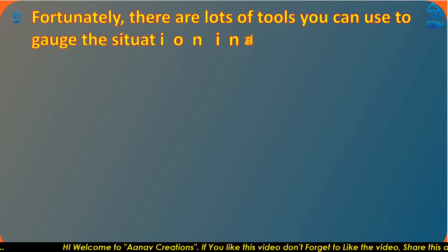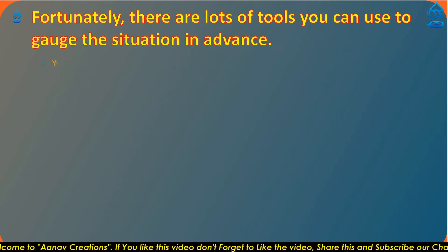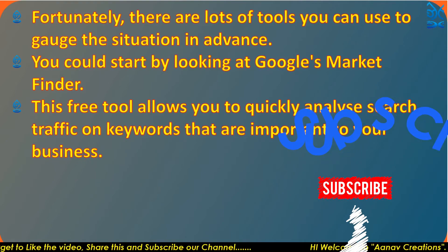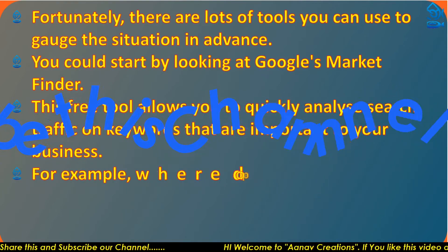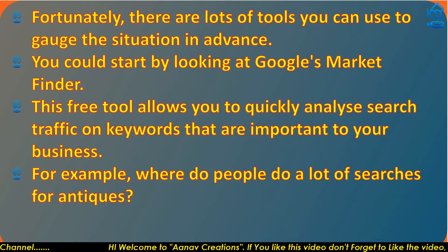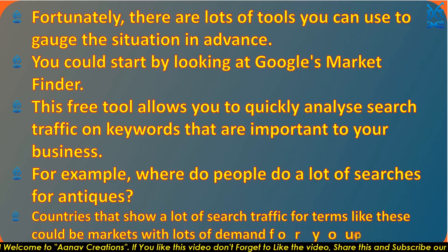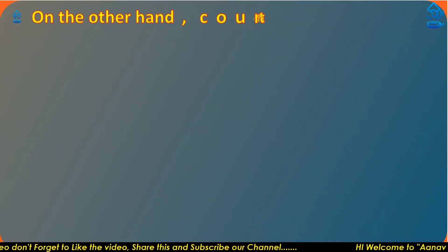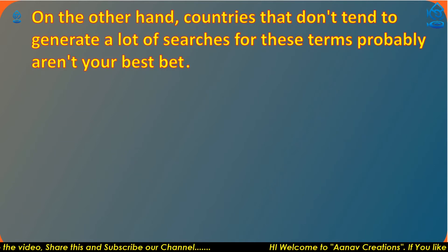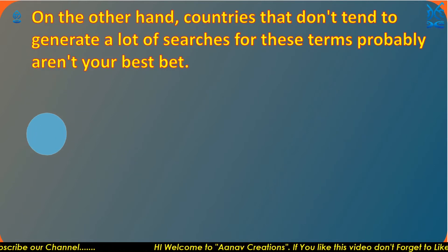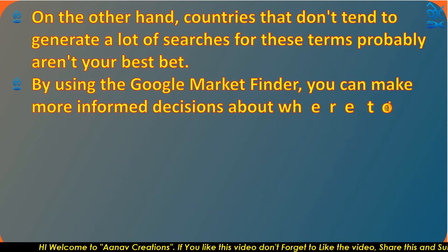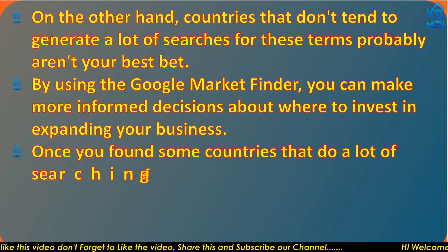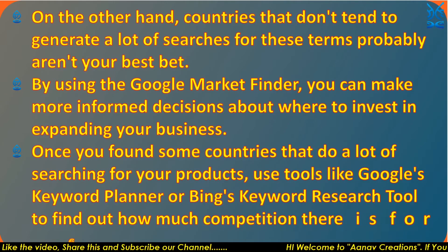Fortunately, there are lots of tools you can use to gauge the situation in advance. You could start by looking at Google's Market Finder. This free tool allows you to quickly analyze search traffic on keywords that are important to your business — for example, where do people do a lot of searches for antiques? Countries that show a lot of search traffic for terms like these could be markets with lots of demand for your products. On the other hand, countries that don't tend to generate a lot of searches for those terms are probably not your best bet. By using Google Market Finder, you can make more informed decisions about where to invest in expanding your business.